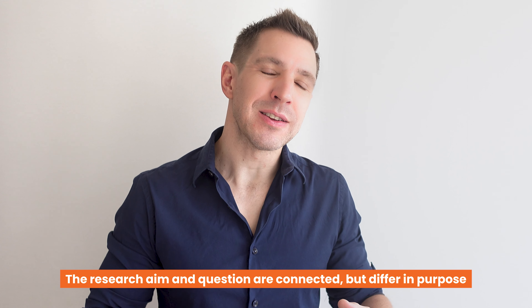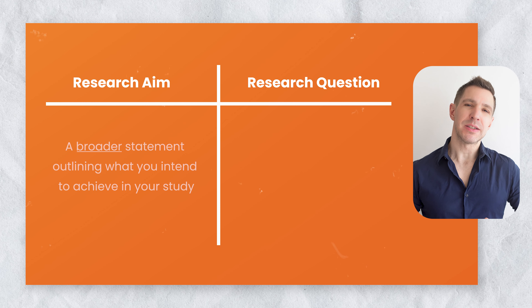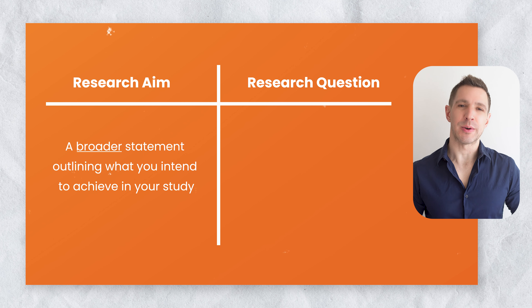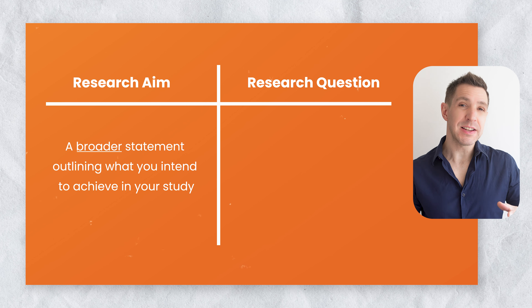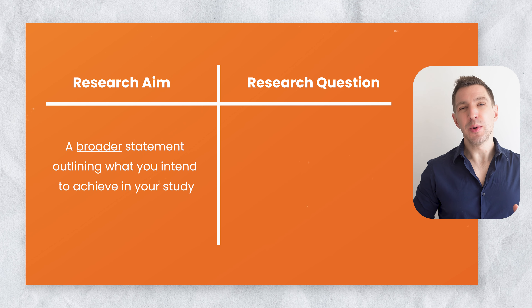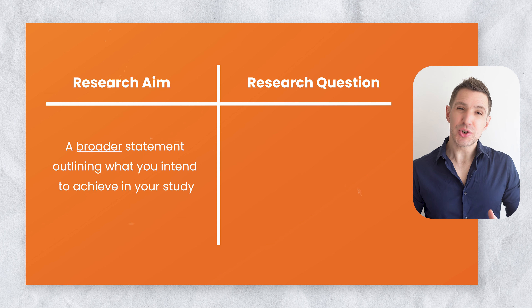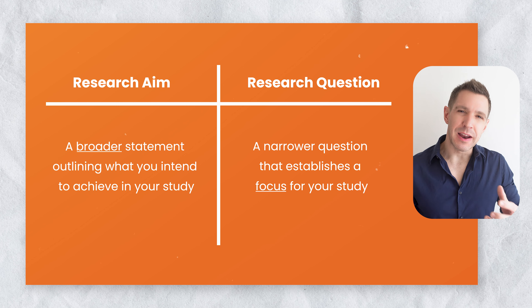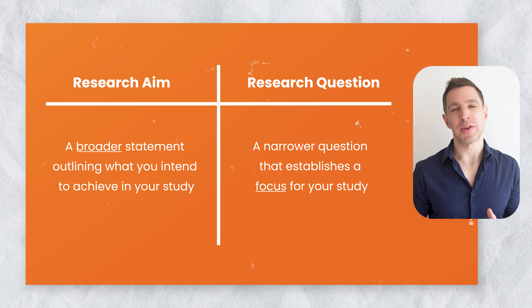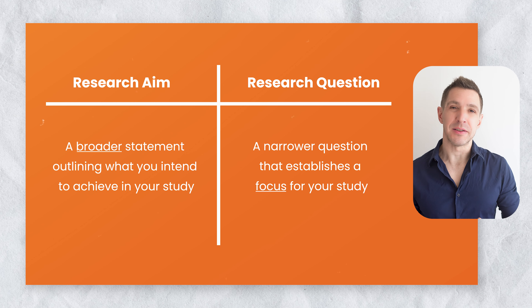Now you might be asking yourself: how is a research question different from a research aim? That's a great question, because the research aim and research question are tightly intertwined but they are very different things. A research aim is typically broader and less specific — it essentially outlines what you hope to achieve with your research and presents a statement of what you intend to explore rather than asking a specific question. The research question, on the other hand, is much more focused — it's the specific query that you're setting out to answer, narrowing down that research aim into a detailed, manageable question that will dictate your study's focus and its methods and analysis.